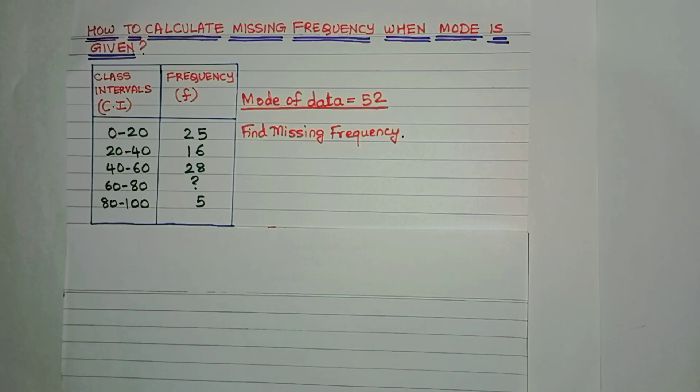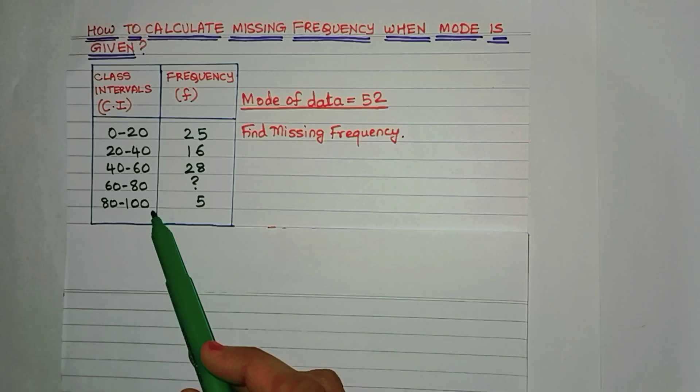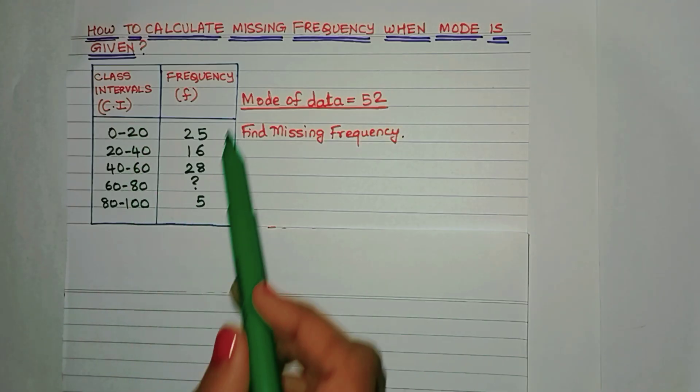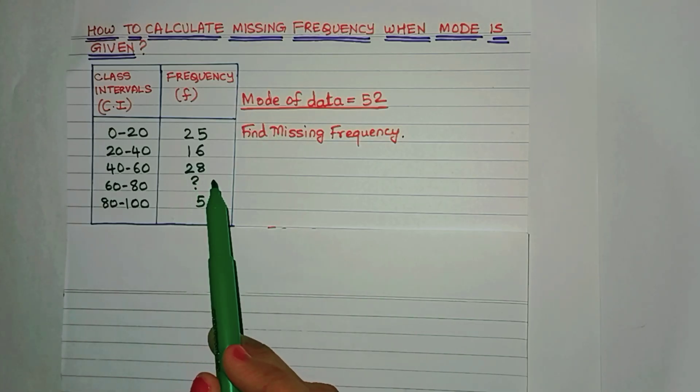Hello everyone, today let's learn how to calculate the missing frequency when the mode is given. In this example, here is the class interval column, this is the frequency column. The mode of the data is given as 52 and we have to find this missing frequency.